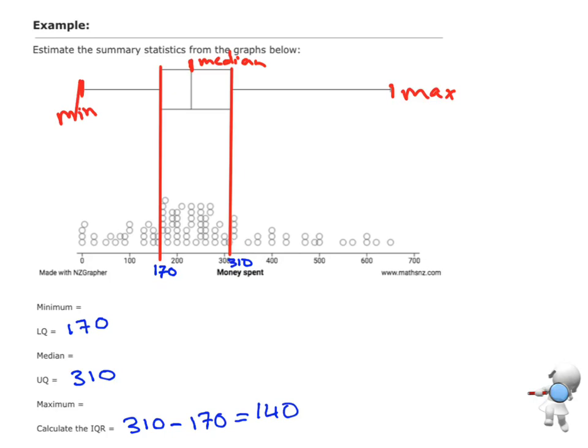I'm just going to draw a line coming down from the minimum there. That minimum is pretty much right on zero. The maximum is around about maybe 650, and our median is around about 230. So I can estimate those values: zero, median of 230, and maximum of 650.